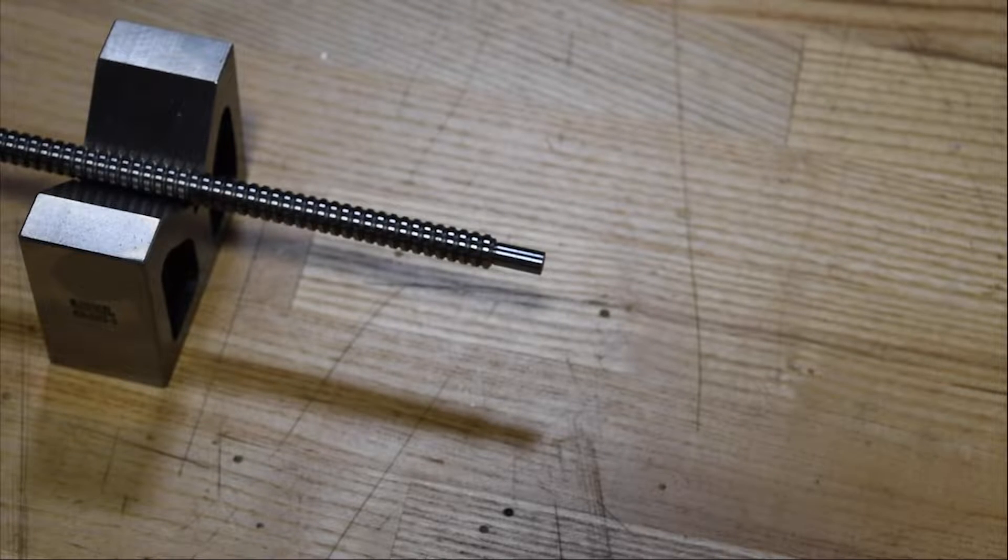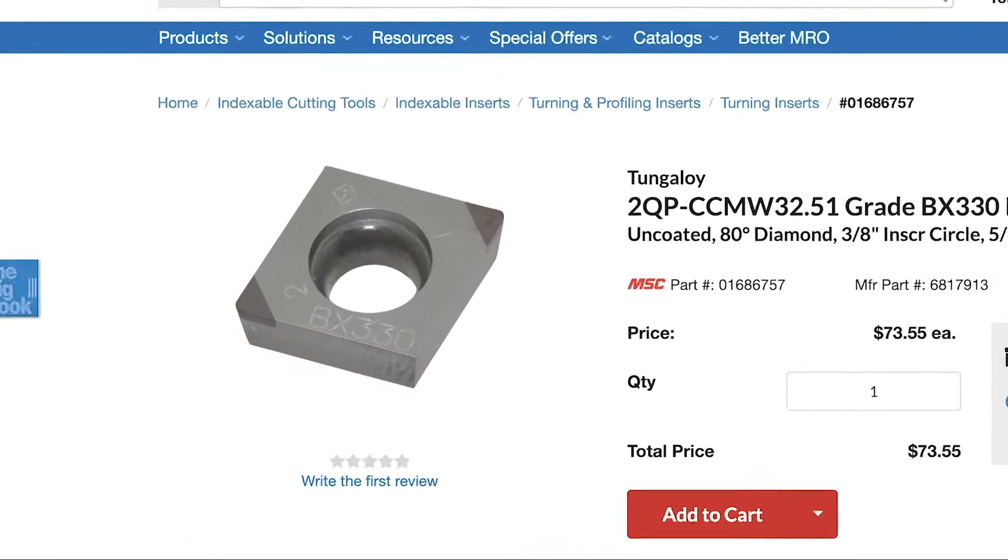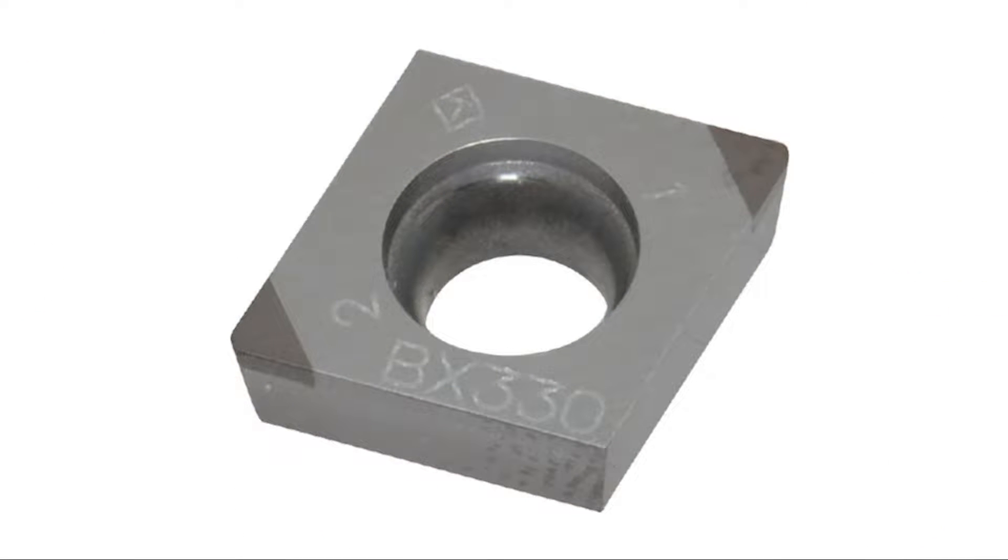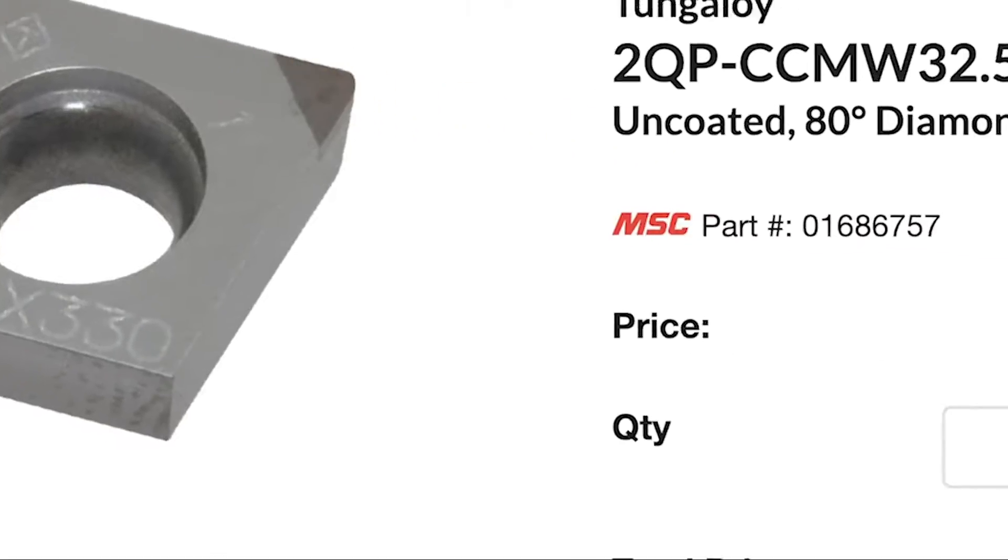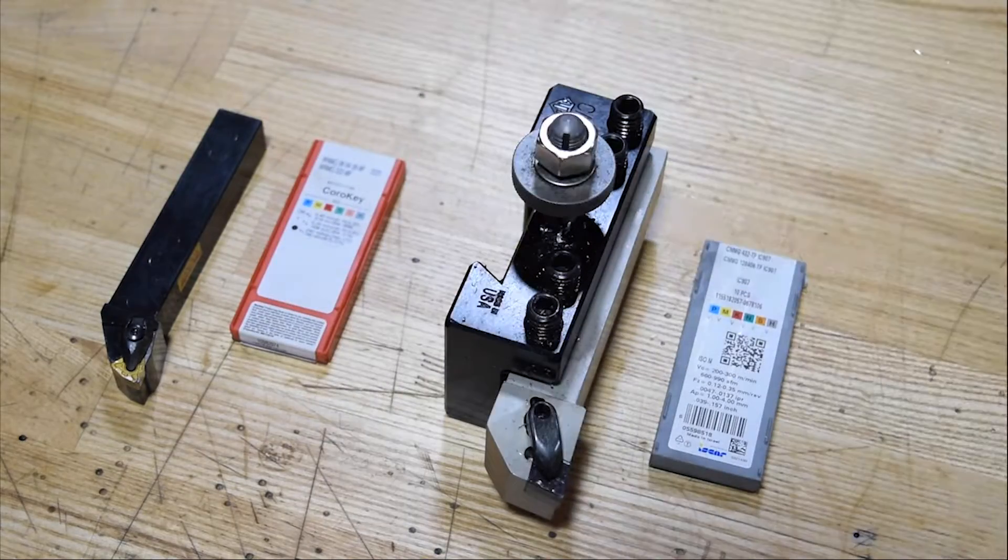So we recently needed to turn down the ends of some ball screws. If you do some research online, everybody points to fancy inserts. This one has a cubic boron nitride tip on it and has a fancy price to go along with it. We wanted to see if one of the inserts that we already had could get the job done.